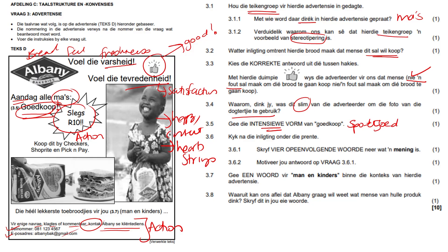Kyk na die inligting onder die prentjie — so the information below the picture — that's where they're drawing your attention to. Skryf vier opeenvolgende woorde neer — consecutive words — wat 'n mening is. A mening is not a fact; a mening is just someone's opinion. So four words that show us someone's opinion. If you look at the words at the bottom — die heel lekkerste toebroodjies vir jou man en kinders — die heel lekkerste toebroodjies is the answer, because it's an opinion. To you, it's the most delicious. So there, that's your answer.